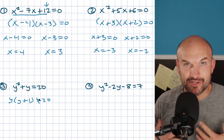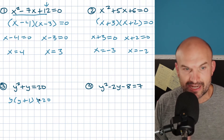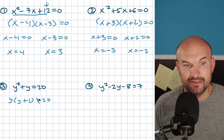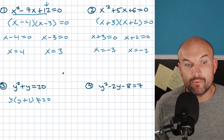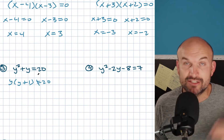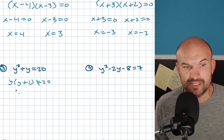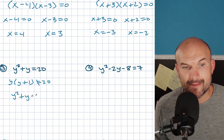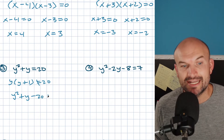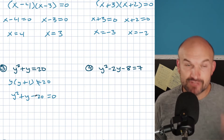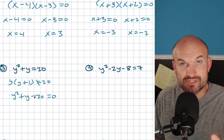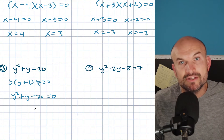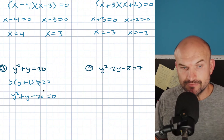The main thing to understand when solving quadratics by factoring is you've got to get everything to the same side. So what you actually want to do is subtract the 20 over to the other side, so you have y squared plus y minus 20 equals zero. You want it set equal to zero because we want a product equal to zero so we can apply the zero product property.